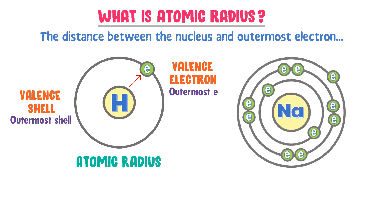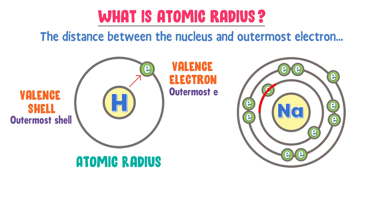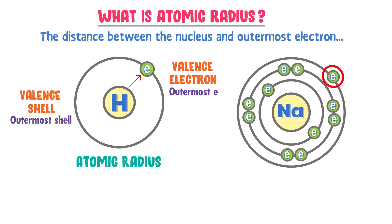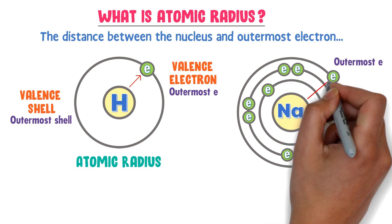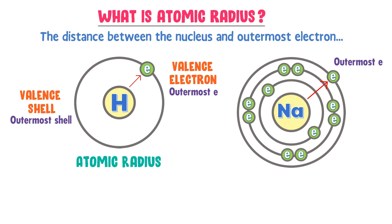Consider a neutral sodium atom. There are three shells in the sodium atom. The first shell contains two electrons, the second shell contains eight electrons, and the third shell contains only one electron. This electron of sodium is called the outermost electron. The distance between the nucleus of sodium and outermost electron is called the atomic radius or radius of sodium.